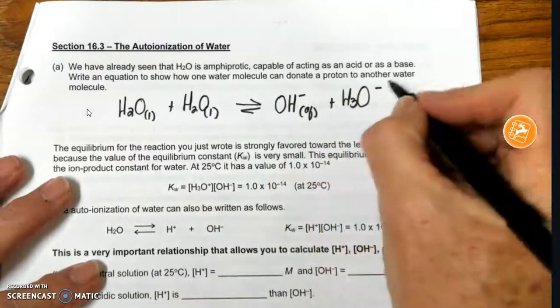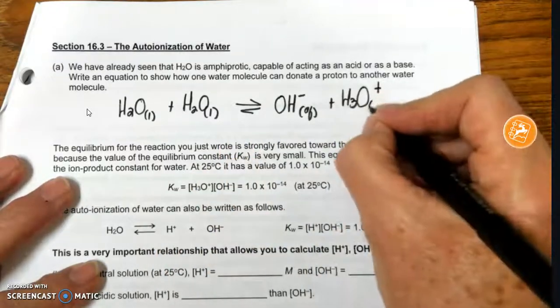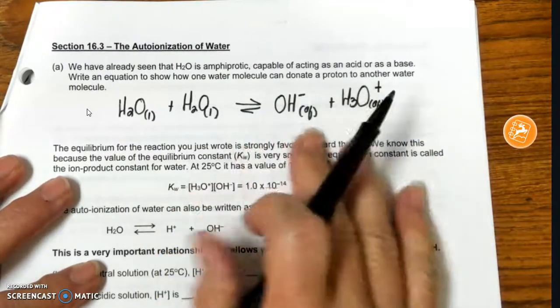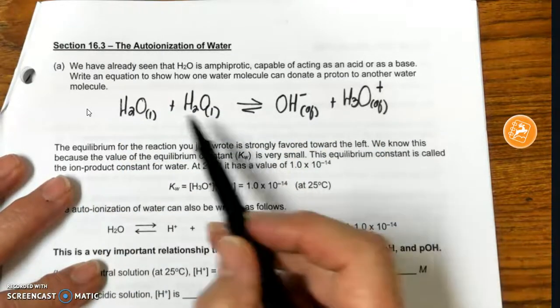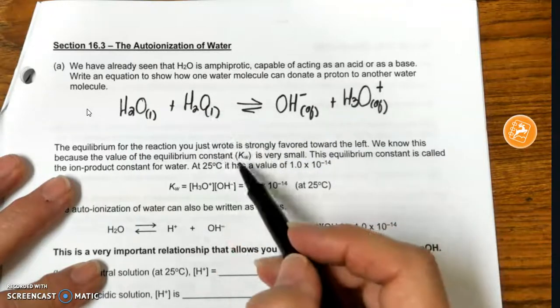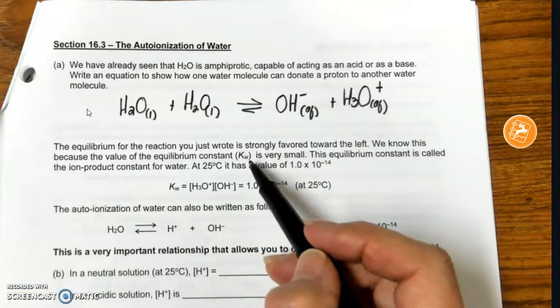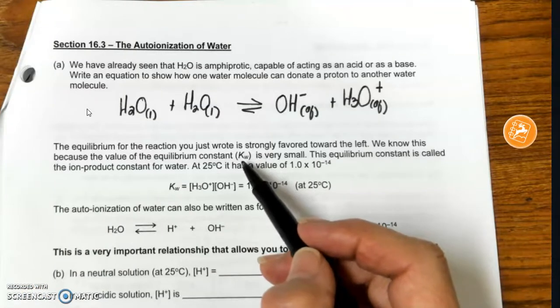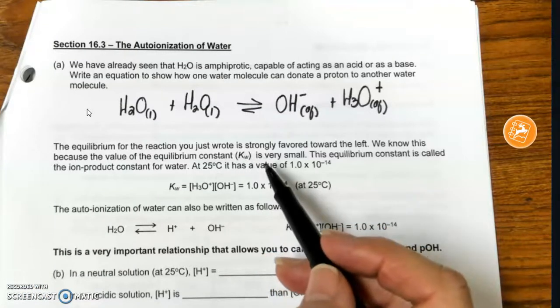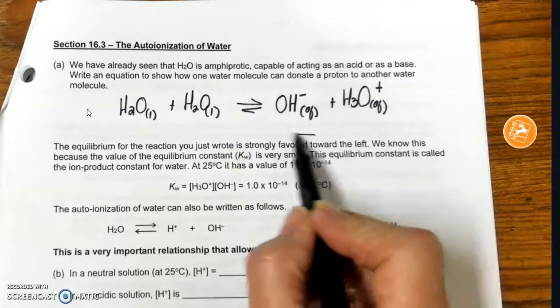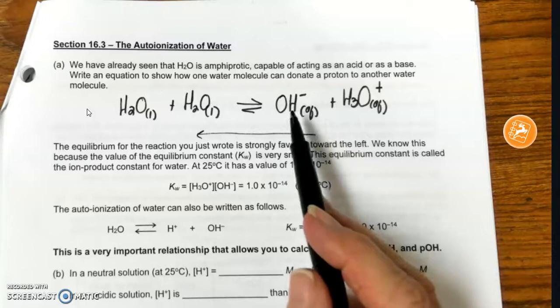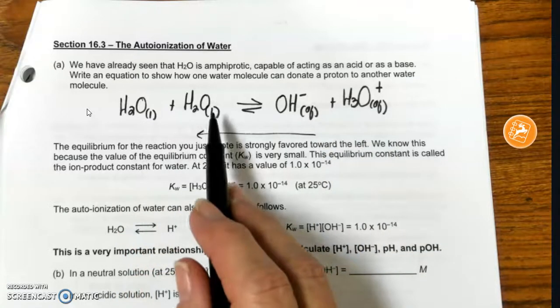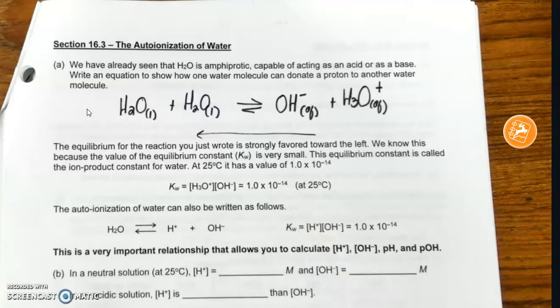Now, this doesn't happen much, right? This is just products over reactants. If I were to look at K, we're now going to call this KW. There's this equilibrium here. We're going to call that KW or K of the autoionization of water. It's very small. It favors heavily in this direction, and the K, remember, products over reactants, but these are both liquids, so they're not in the expression, is 1.0 times 10 to the minus 14.